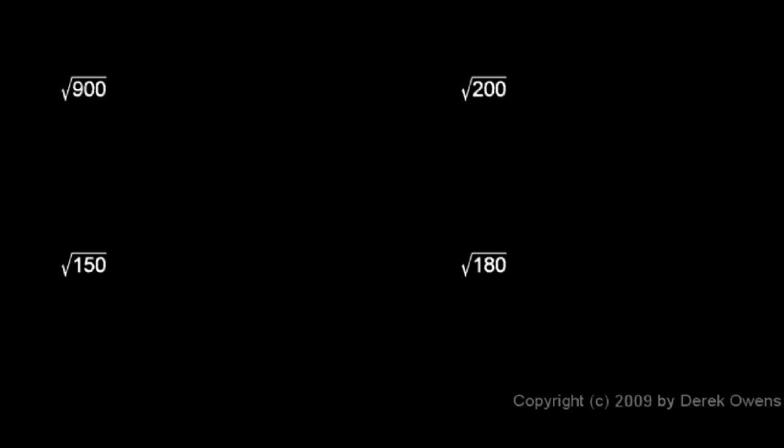Here we're told to simplify the following, and we're not supposed to use a calculator. Square root of 900. Well, you might know that 900 is 30 times 30, which is 30 squared. So the square root of 900 is simply 30.